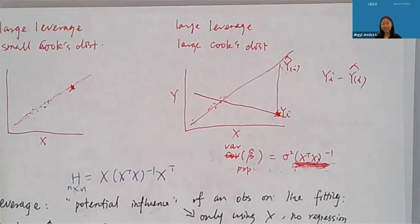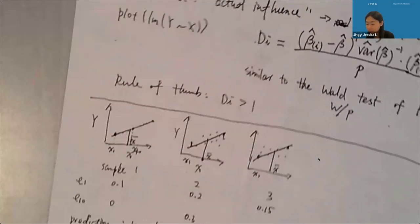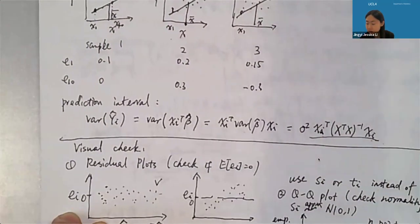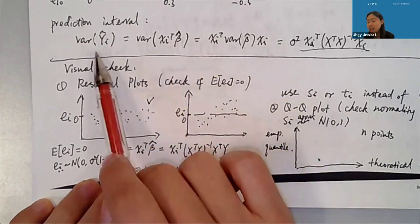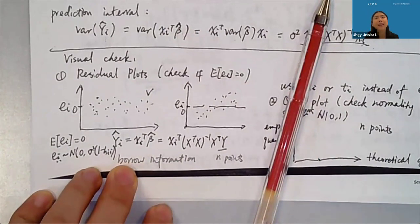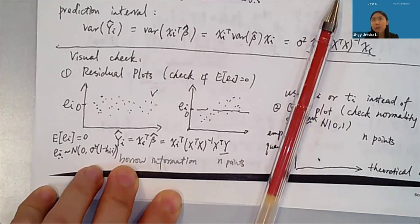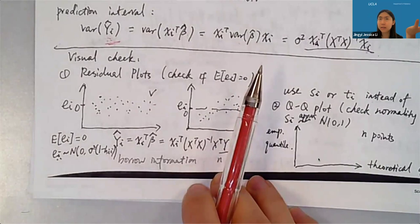One more thing: the prediction interval. If our goal is predicting y_i for a particular observation rather than inferring beta, we need to quantify uncertainty in y_hat_i = x_i^T beta_hat. The variance of y_hat_i = x_i^T Var(beta_hat) x_i = sigma^2 * x_i^T(X^TX)^{-1}x_i. This is the same scalar term seen in the predictive residual formula. The prediction interval provides uncertainty quantification — if it's large, don't trust the prediction too much; if small, you can be more confident.